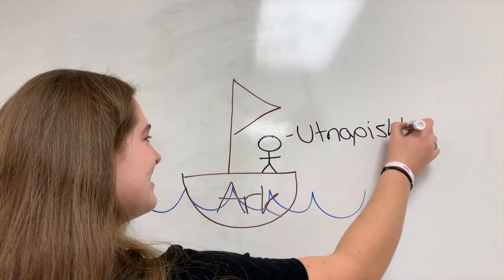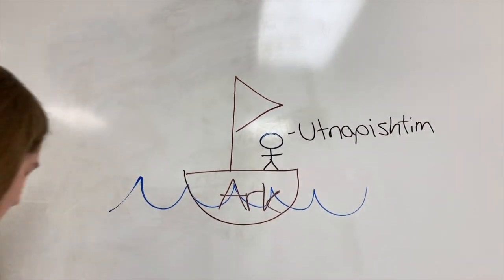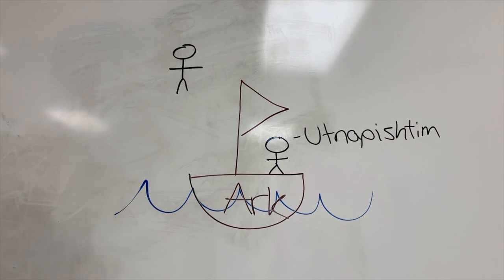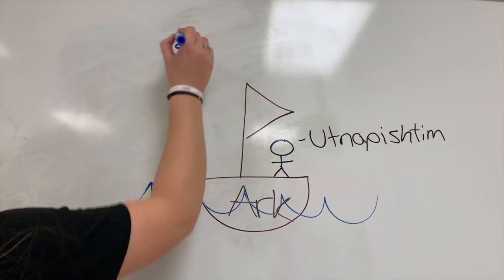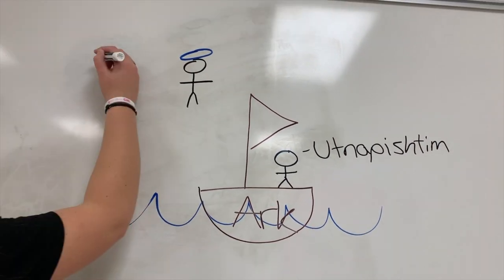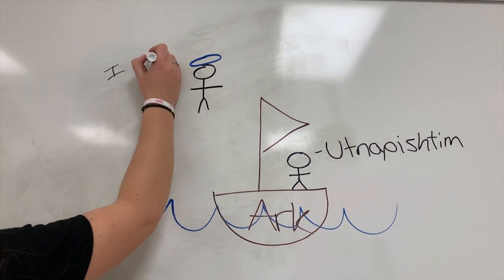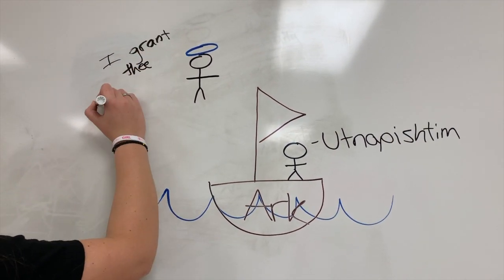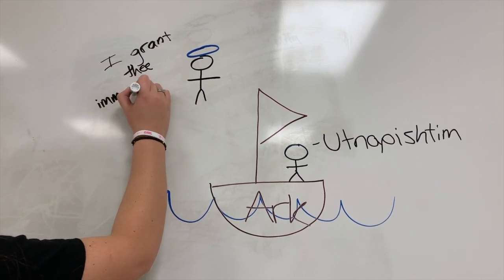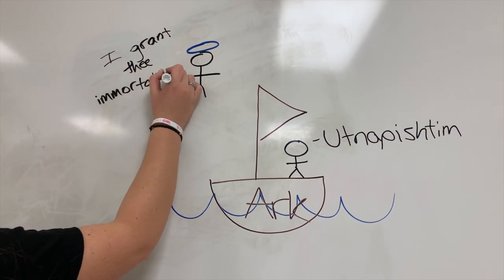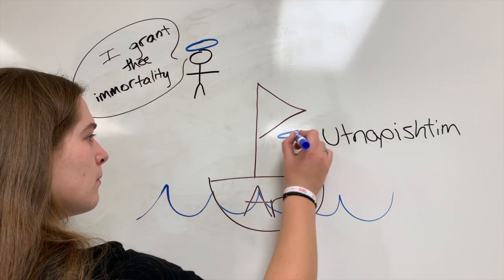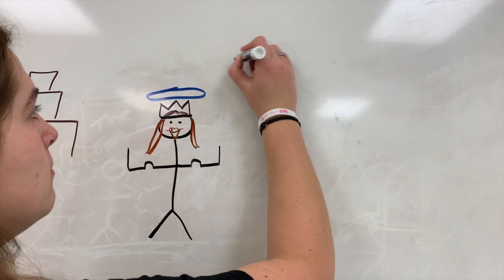Another example is when the people complained to the gods, saying, Gilgamesh shouts the toxins for his amusement. His arrogance has no bounds by day or night. No son is left with his father, for Gilgamesh takes them all, even the children. Yet, the king should be a shepherd to his people. And so, they created Enkidu to be Gilgamesh's perfect match.